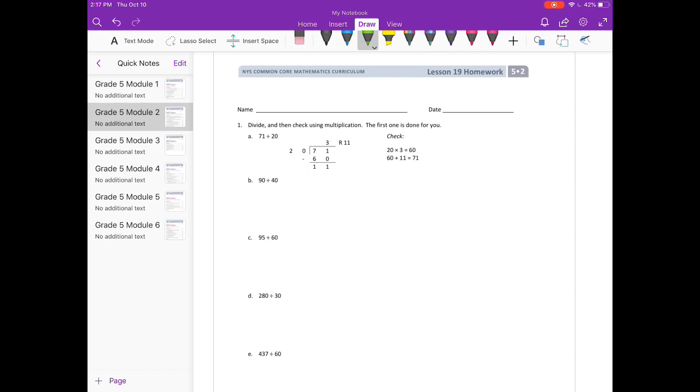Let's skip to B. 90 divided by 40. So I'll set it up. 90 divided by 40. So how many times can 40 go into 9? Well that would be 0, so I'm going to put a 0 above the 9. But 40 goes into 90 2 times.